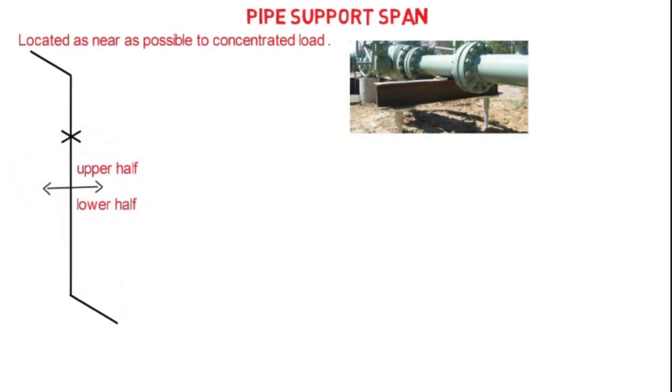The support should be located on the upper half of the riser, or we can say above center of gravity, to prevent the instability and overturning of the pipe under its own weight. Guides may be placed on the long vertical risers to reduce the pipe sag resulting in excessive pipe deflection. These guides are usually placed in span intervals of twice the normal horizontal span and do not carry any dead load.